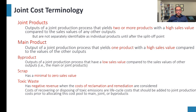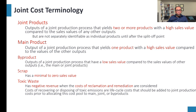Byproducts are outputs of a joint production process that have a low sale value compared to the sales value of main or joint products. Scrap means we spoil some product, and it has minimal to zero saleable value. Toxic waste has a negative revenue when the cost of reclamation or remediation is considered — costs of recovering or disposing of toxic emissions are life cycle costs and should be added to joint production costs prior to allocating them to main, joint, or byproducts.